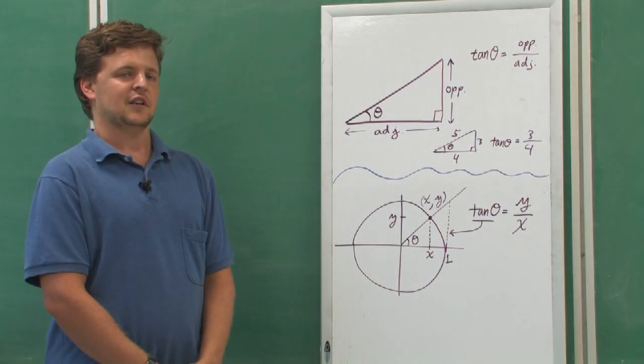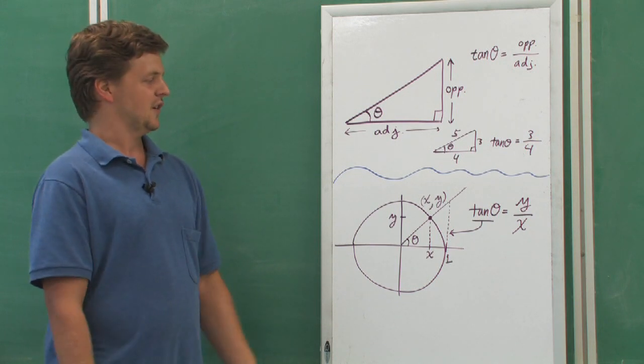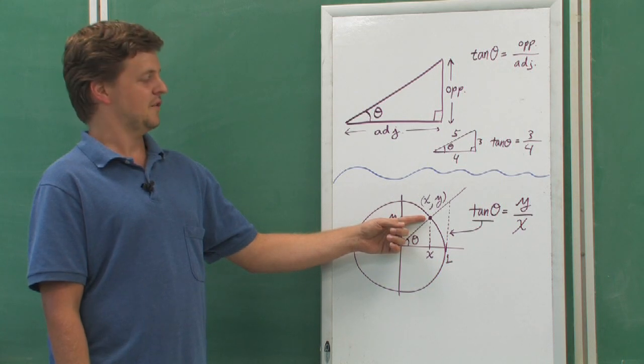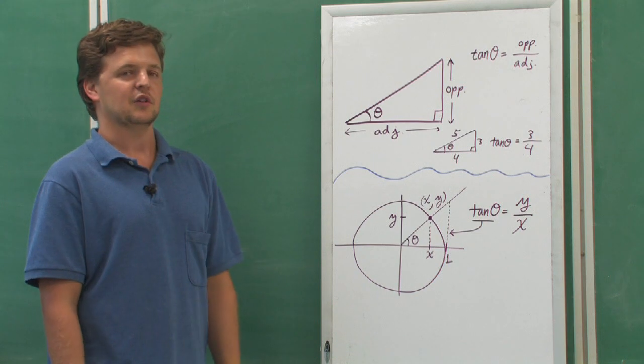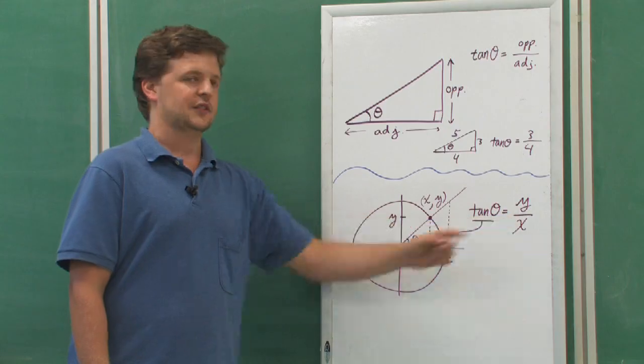Now, however, I can describe the opposite and the adjacent sides by using the x and y coordinates. I can use the x and y coordinates of the point where that angle, the ray making that angle, crosses the circle. And so tangent theta equals y divided by x.